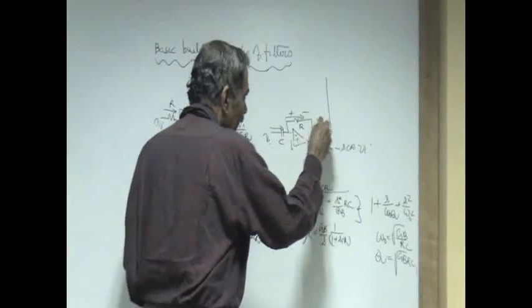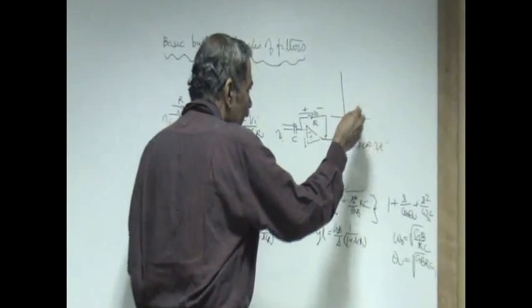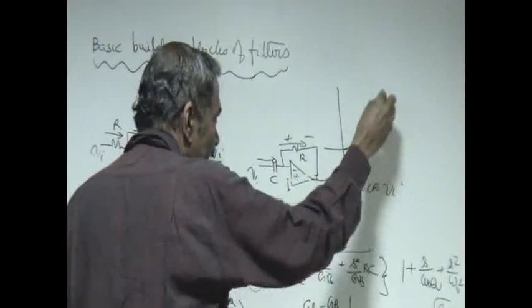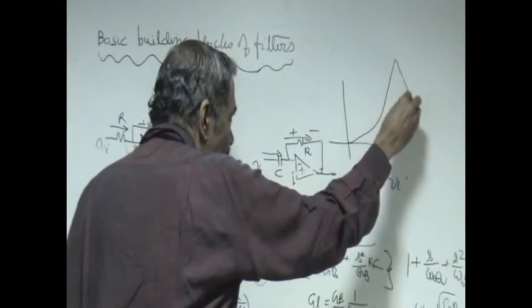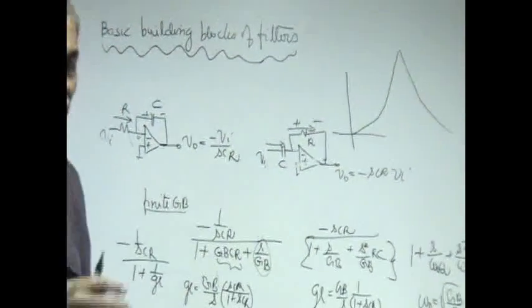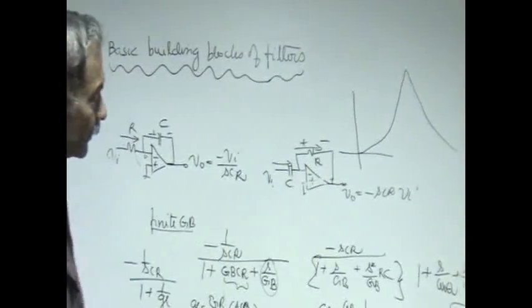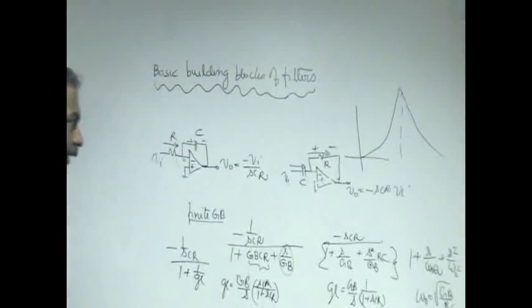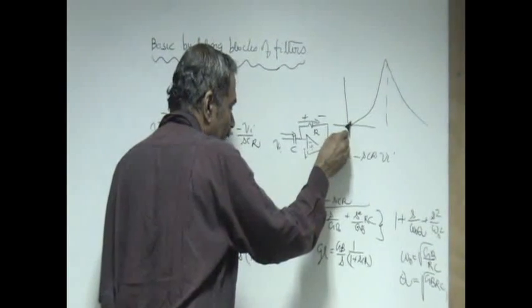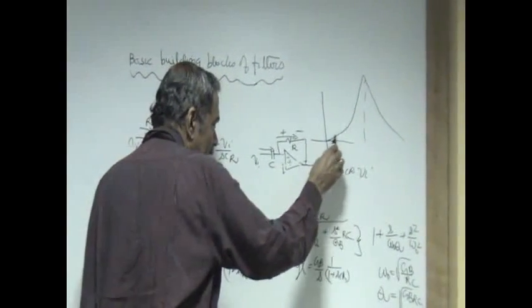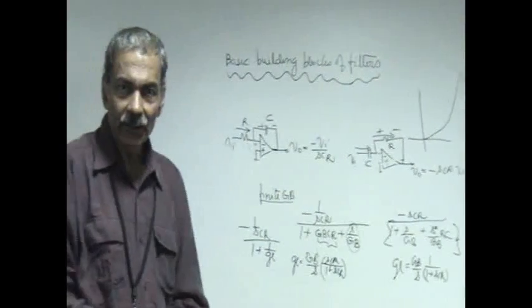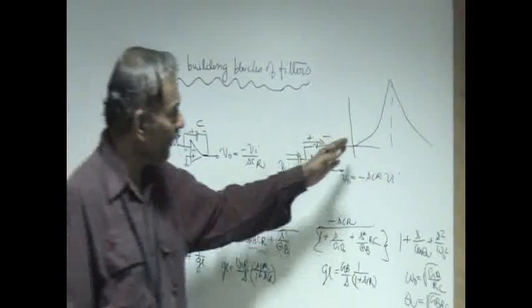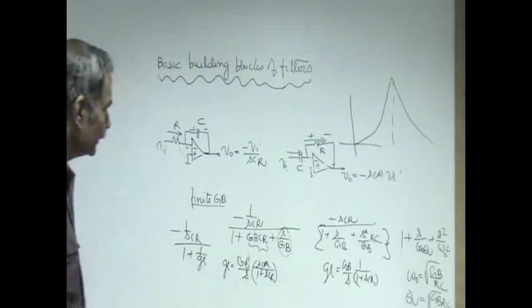The frequency response of this, however, will be showing a peaking because of the fact that it is not just differentiating, and therefore it is going to behave like almost like a bandpass filter. This peak depends upon the q of the system. Essentially speaking, the frequency response of this should be just a line, a straight line going all the way indicating that the output is directly proportional to frequency. Because of finite gain bandwidth effect, it will have this kind of response.